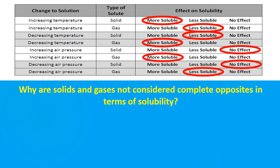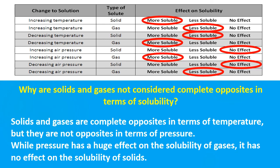So based on that information, why are gases and solids not considered complete opposites in terms of solubility? We look at them in terms of how temperature and pressure affect the solubility of solids and gases. With reference to temperature, they are exact opposites. But because pressure has no effect on the solubility of a solid — while pressure has a huge effect on the solubility of a gas — they cannot be considered complete opposites. They're only opposites in terms of temperature, but not in terms of pressure.